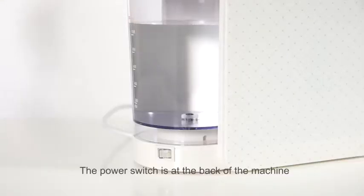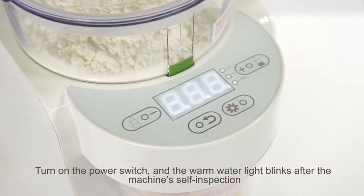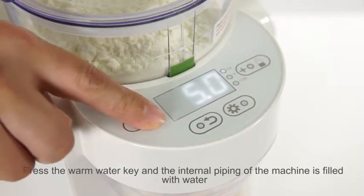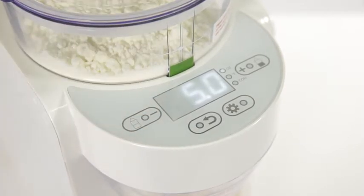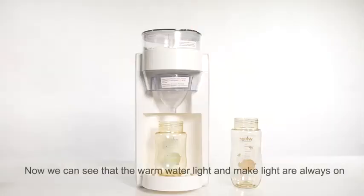The power switch is at the back of the machine. Turn on the power switch and the warm water light blinks after the machine's self-inspection. Press the warm water key and the internal piping of the machine is filled with water. Now we can see that the warm water light and make light are always on.